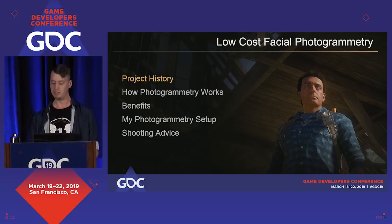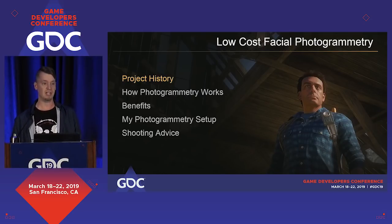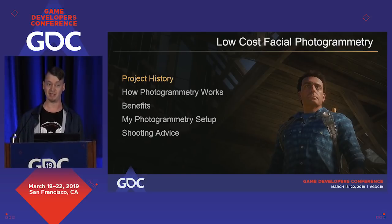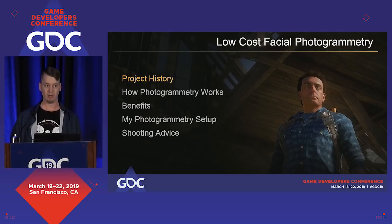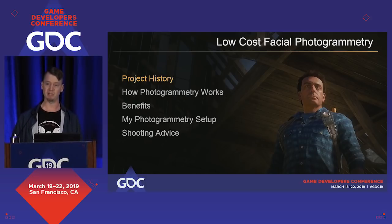Before I dive too deep into this, I'd like to start by giving you some of our project history so you have a little bit of context. Back in early 2016, State of Decay 2 went through an engine change mid-production, which had a huge negative impact on our development schedule. While I waited for some infrastructure things to get set up, I decided to see what I could do to speed up our production pipeline, and photogrammetry was one of the things on my list to research.